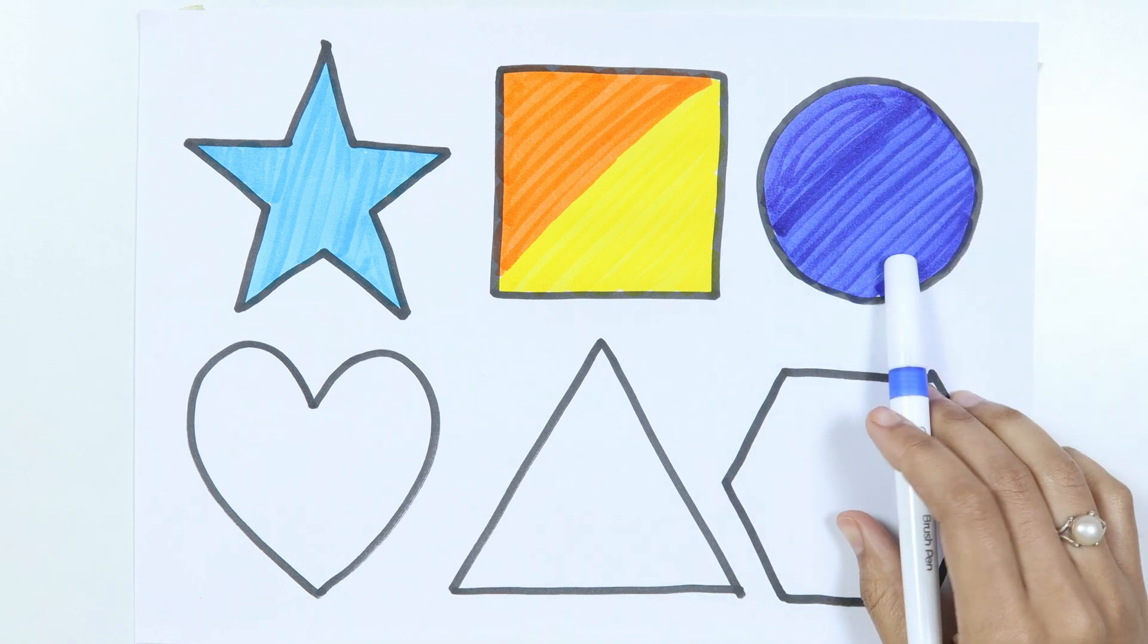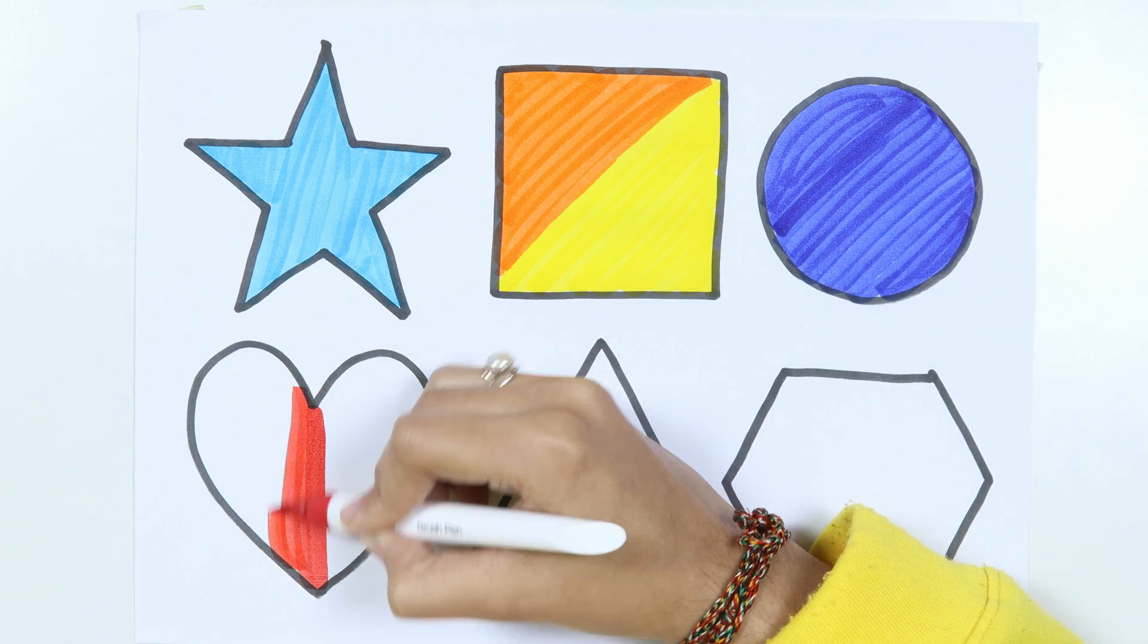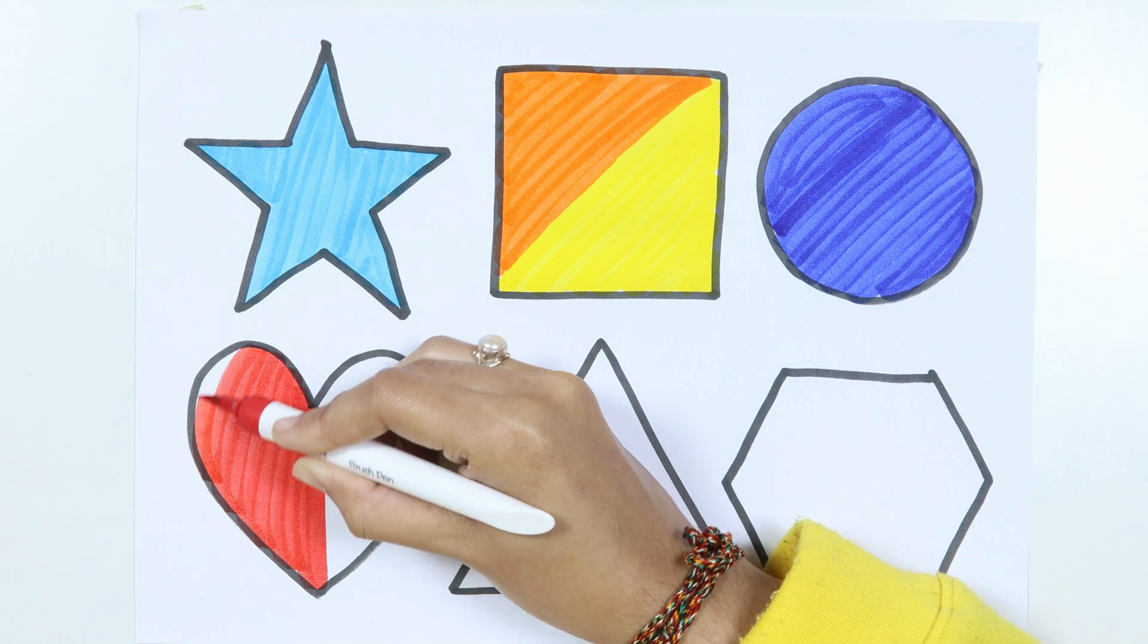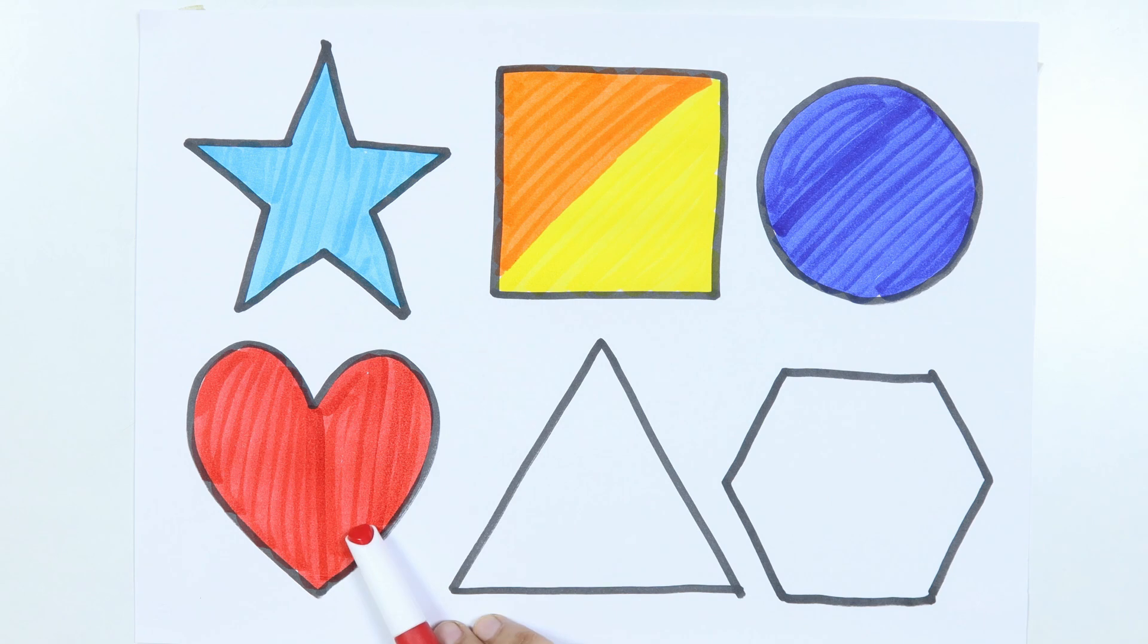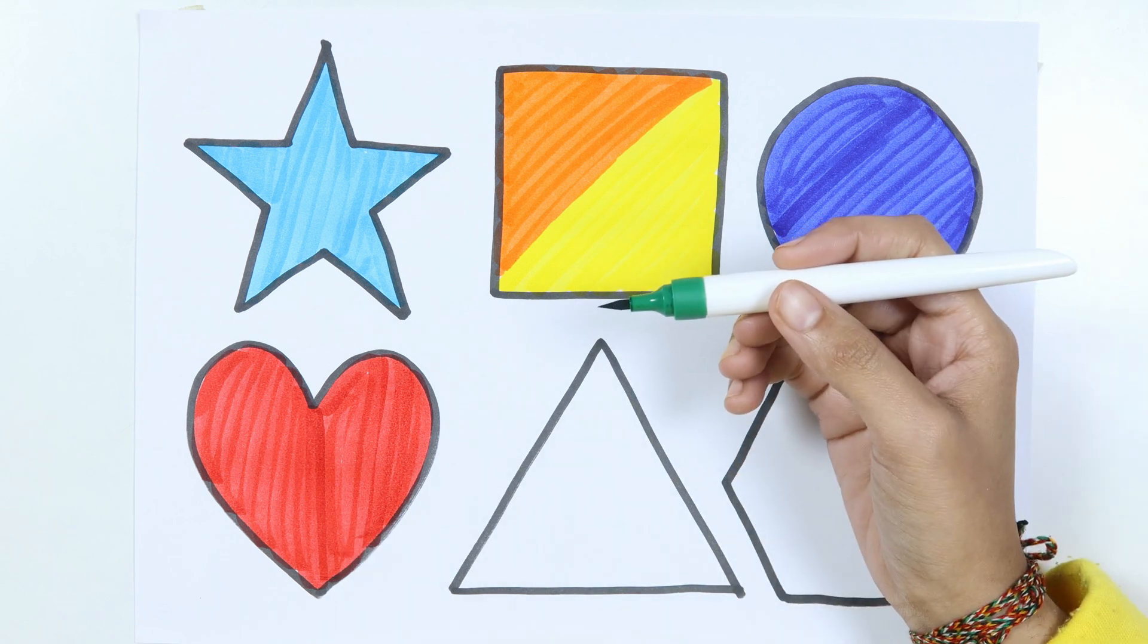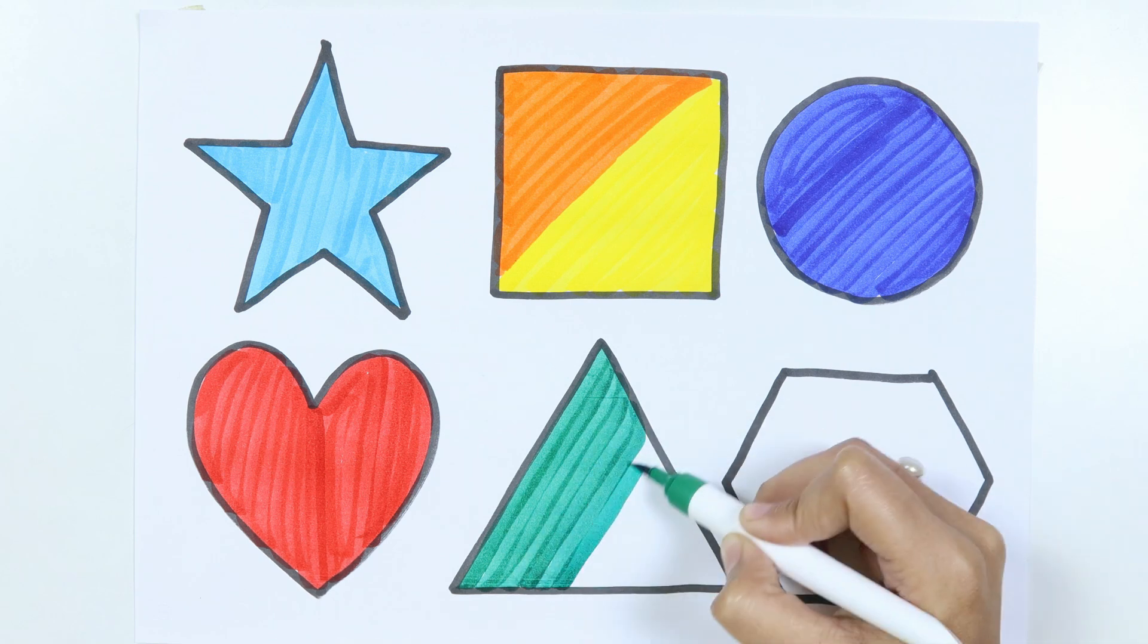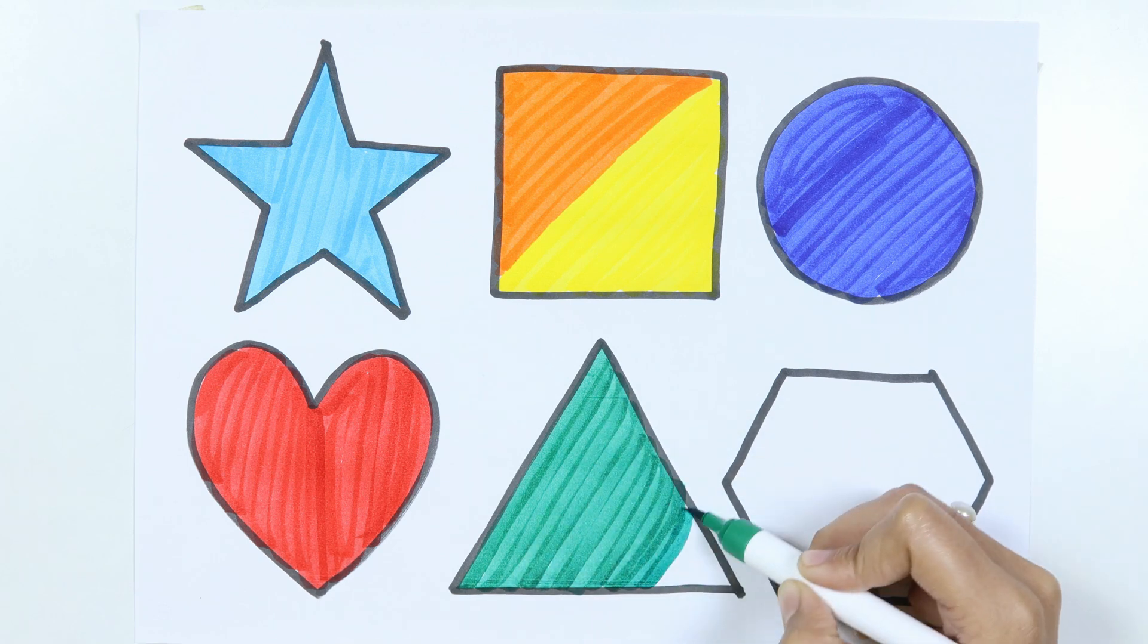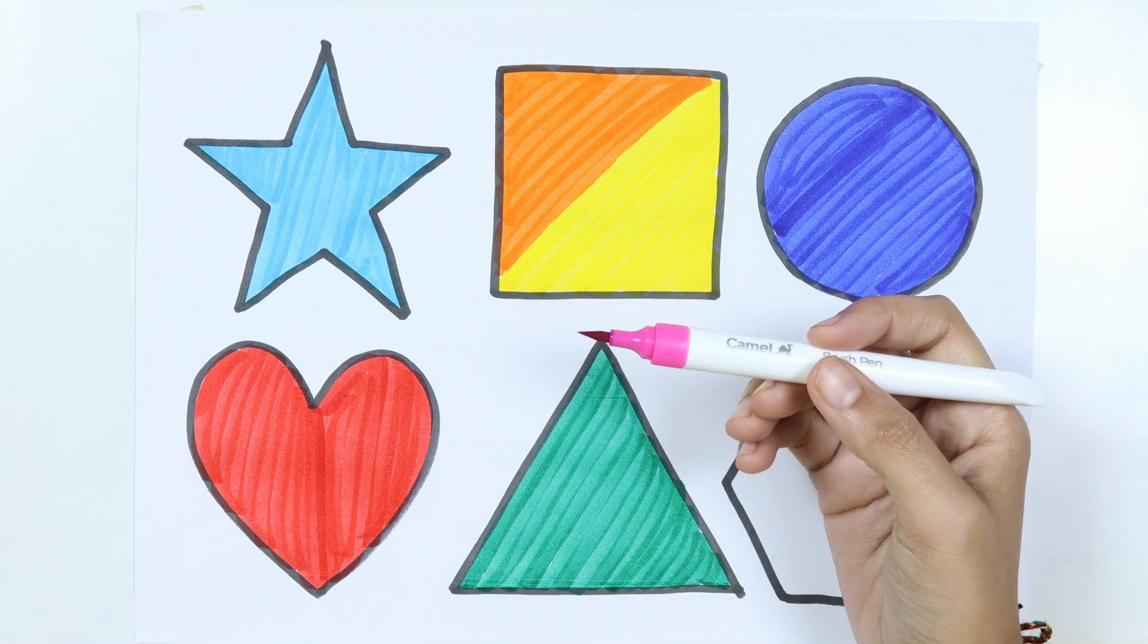Circle. Red color. Heart. Dark green color. Square. Pink color.